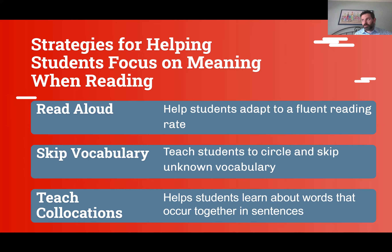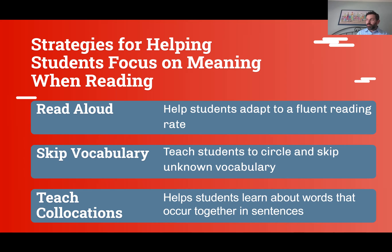You could read aloud with your students — either taking turns reading if students are comfortable, or simply having them listen to you read. This can help them develop a more fluent reading rate. You can also train them to skip vocabulary they don't know — circling it or writing it down with the page number — and after finishing the text, go back and use a dictionary to learn more about that word. The goal is to focus on meaning instead of stopping every sentence for a new word. If a new word comes up a lot, it's important to learn; if it occurs only once, it may not be essential.